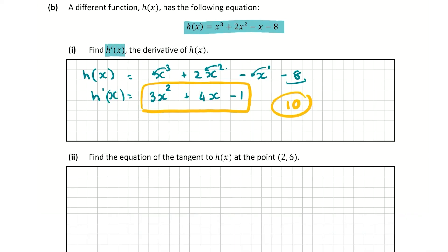Now the second part of question B asks us to find the equation of the tangent to h(x) at the point (2, 6). So what we're going to do is find the slope of the line at the point (2, 6), or the slope of the curve. Then we can use that to find the equation of the tangent. I'm going to take h'(x), which we just found, the derivative of h(x).